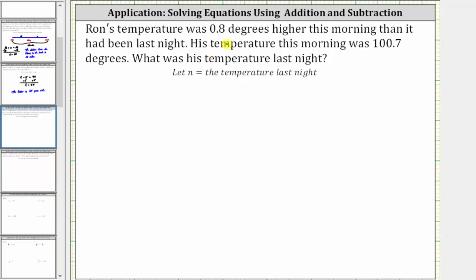We're told that Ron's temperature was 0.8 degrees higher this morning than it had been last night. His temperature this morning was 100.7 degrees. What was his temperature last night? And we'll let the variable n equal the temperature last night.